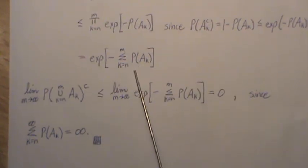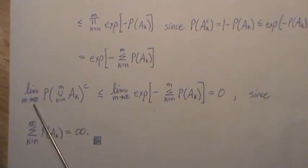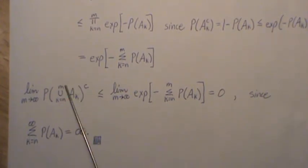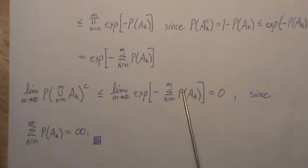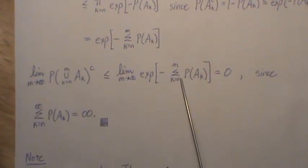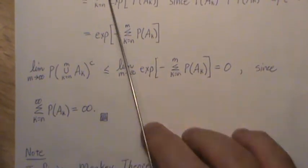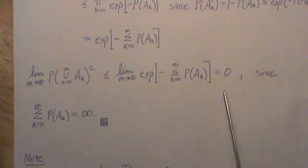This infinite product of exponentials is the same as the exponential of the sum of the probabilities in the exponent — so it's minus the sum of the probability of the events. If we look at the limit as m goes to infinity, the complement is less than or equal to this exponential. But as m goes to infinity, this sum goes to infinity, which means this exponential goes to zero. And that's what we wanted to show — that this probability goes to zero, so the probability of the limit supremum goes to one.